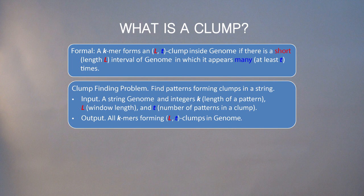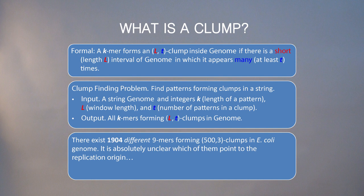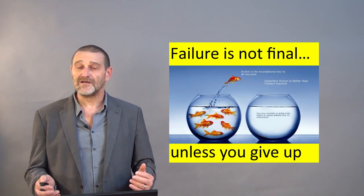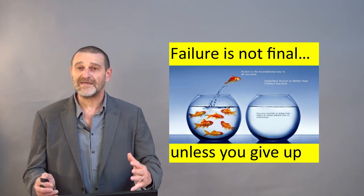Let's assume that you solve it and run it on the E. coli genome, the workhorse of bacterial genomics. Here's the result: we find about 2,000 potential 500-3 clumps, meaning 500-length windows where there are frequent words appearing three or more times. It is just too many — it's absolutely unclear how to choose the real replication origin among them. What should we do? Should we give up? Let's try to develop new ideas and see how we can move further despite the fact that we seem to be stuck.